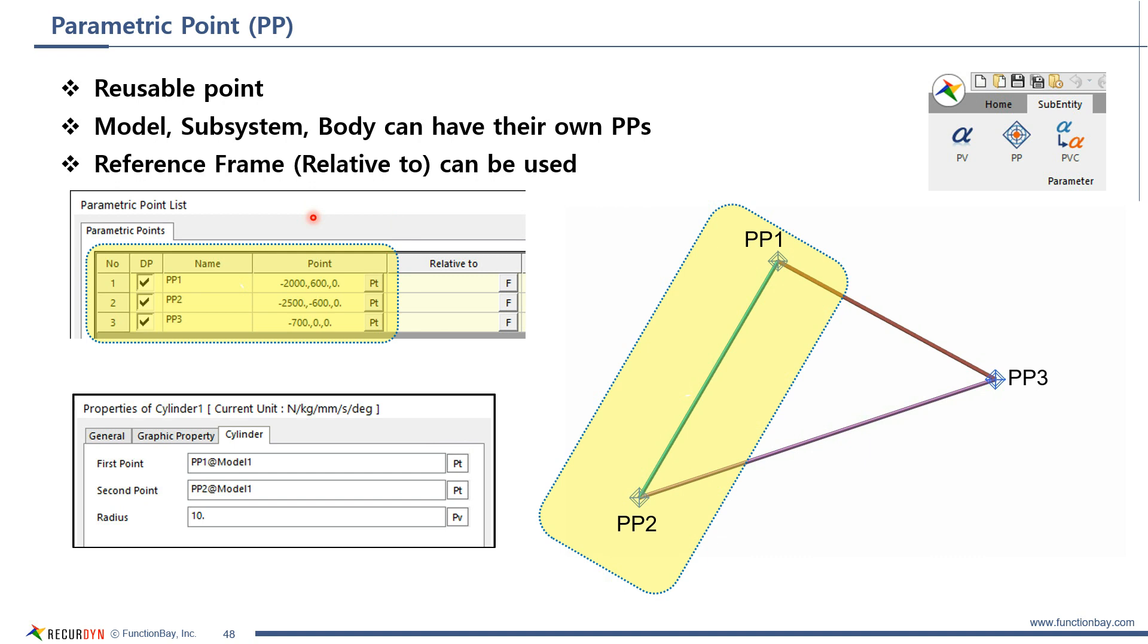Similar to parametric value, once PP is defined, it can be used for several bodies, joints, markers. For example, using PP, the location of the several bodies can be changed at once. In this image, endpoints of each stick are set using parametric points, like this.